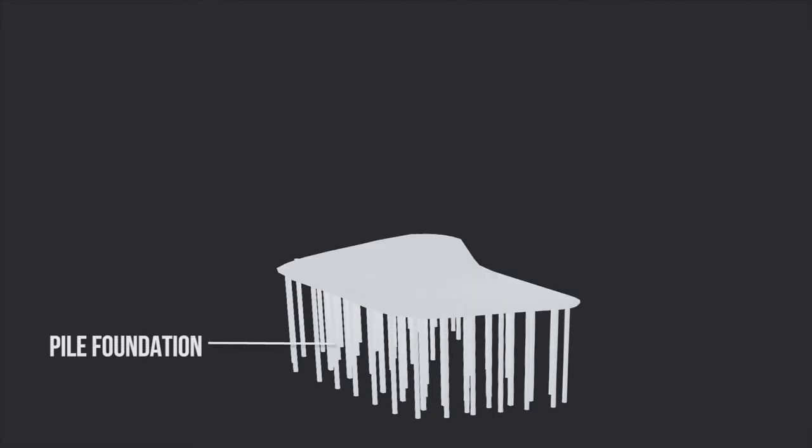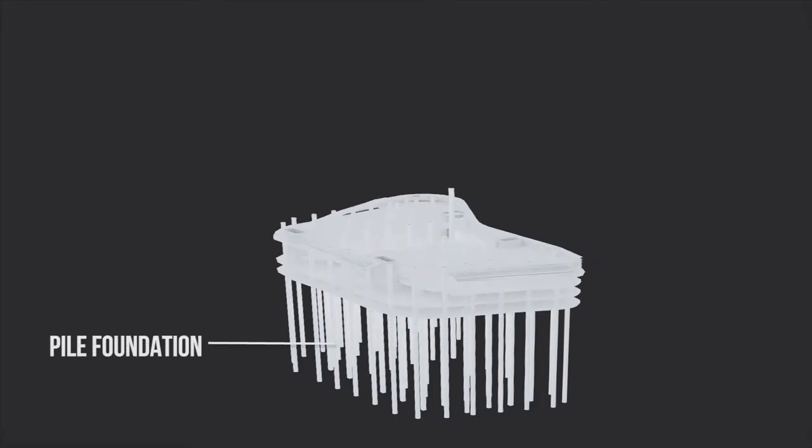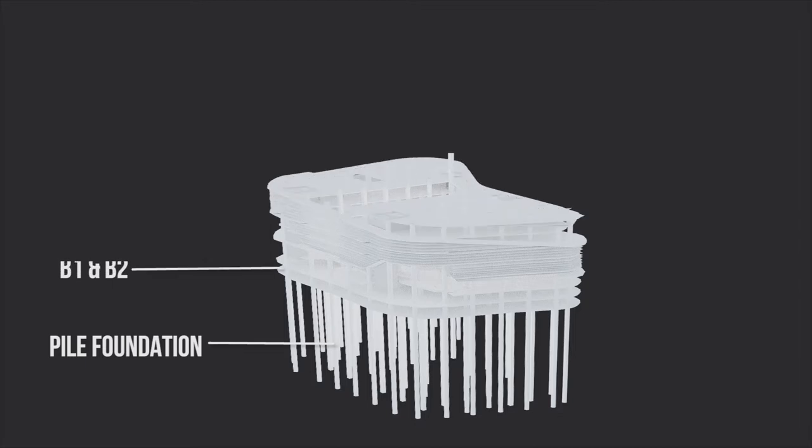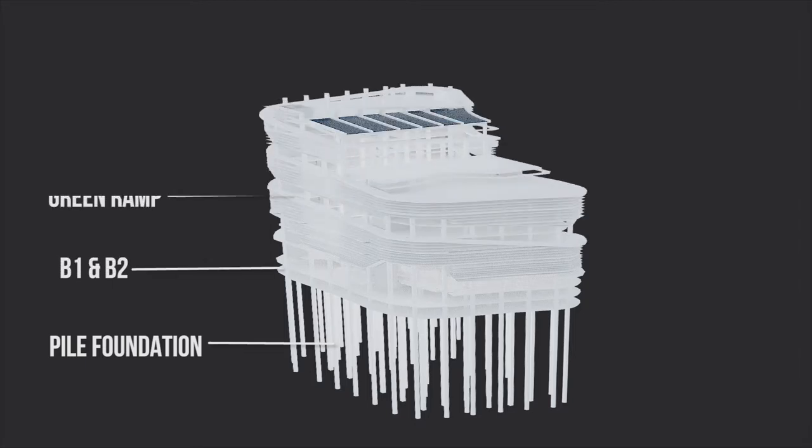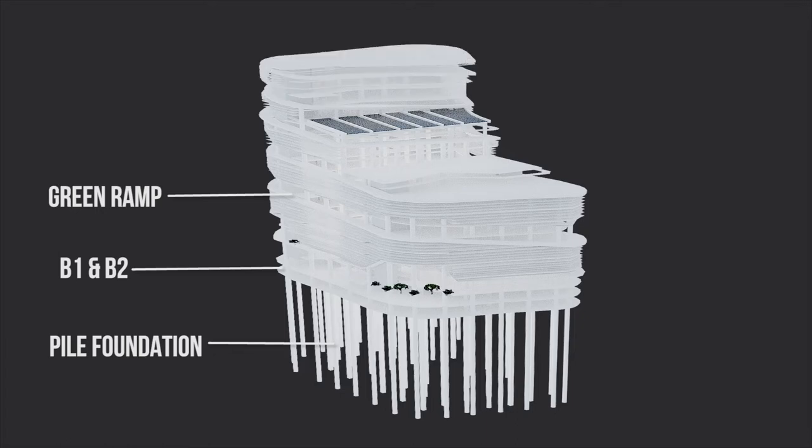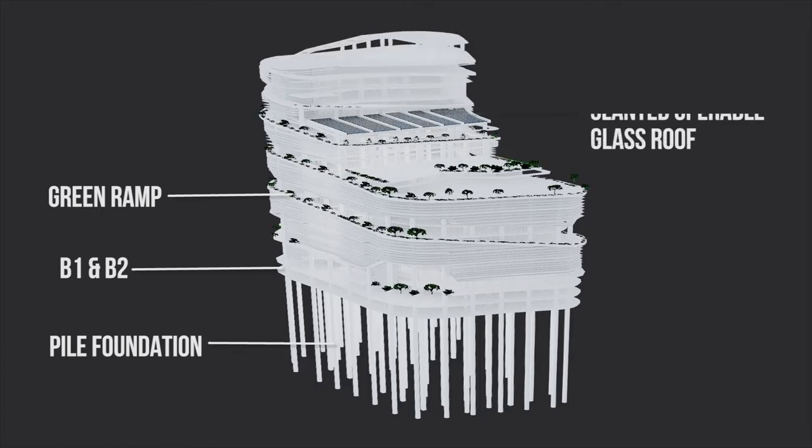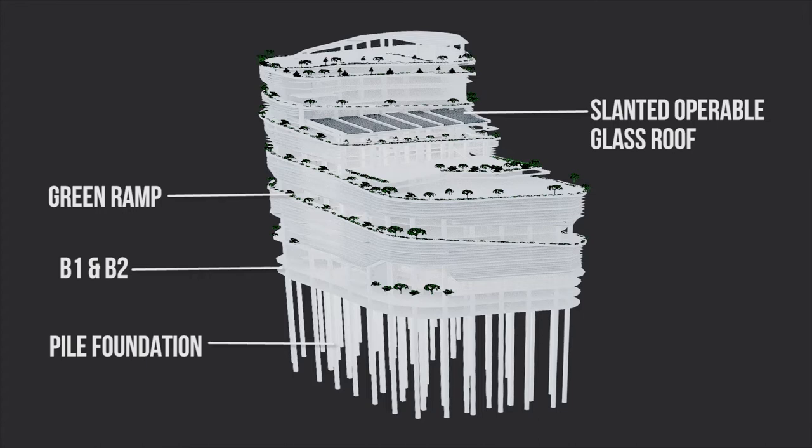We can see in this northeast perspective the pile foundations, the basement one and the basement two, the green ramp from the ground floor going to the rooftop. Here is the slanted operable roof and the rooftop garden.